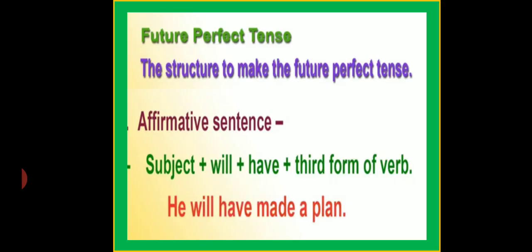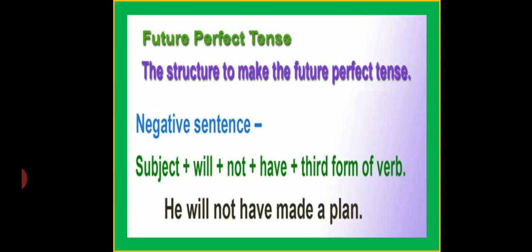So students, this is the structure of sentence formation. In affirmative sentences, the structure is: subject plus will have plus verb third form. For example: he will have made a plan. In negative sentences, we add not after will but before have. The structure is: subject plus will plus not plus have plus verb third form. For example: he will not have made a plan.